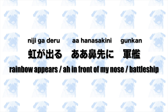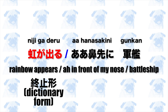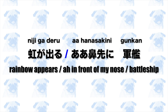The rainbow haiku does not contain one of the eighteen kireji, but it is obvious where you should put a full stop, because the first phrase, niji ga deru, ends in the shushikei or dictionary form, deru (come out, emerge). The interpretation of this haiku is very difficult, and I have no idea what the context of this poem is, so I'll leave it up to you to interpret it.